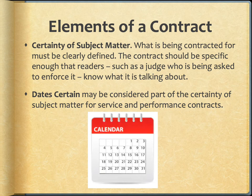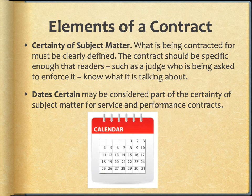Contracts need certainty of subject matter. What is being contracted for must be clearly defined. And in some contracts, dates certain are an element of the contract that is enforceable. If you contract to purchase a custom wedding cake and it arrives a month too late for the big day, the contract has probably been violated, or you should have made sure that dates certain were considered an element of that contract.